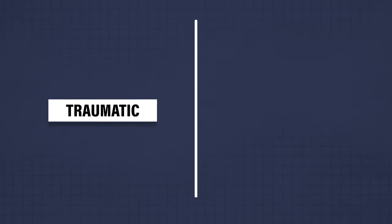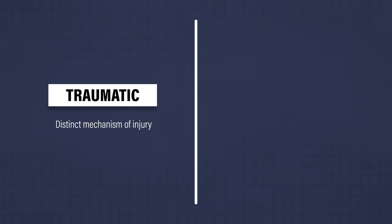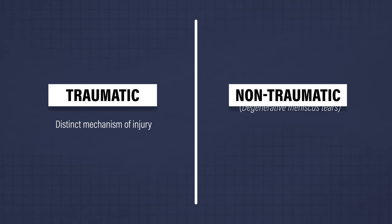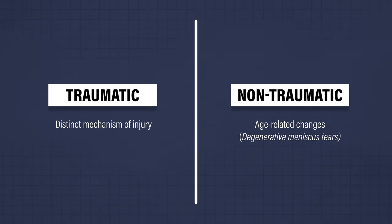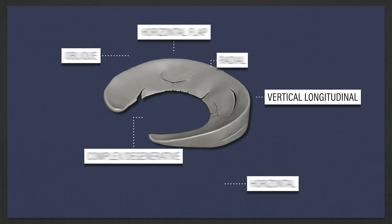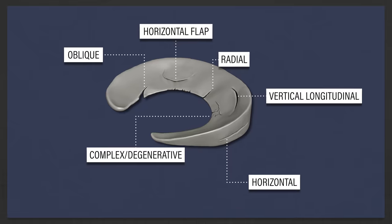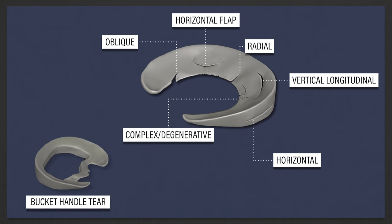Meniscus tears are either traumatic, in which there is a distinct mechanism of injury, or non-traumatic, which occurs secondary to age-related changes. They are often classified according to location and orientation. Tears can be vertical longitudinal, radial, horizontal, oblique, or complex. Vertical or oblique tears that twist and fold over within the joint are termed bucket-handle tears.